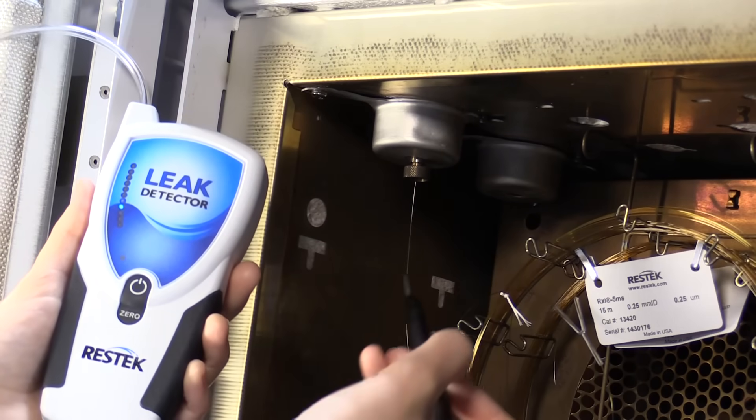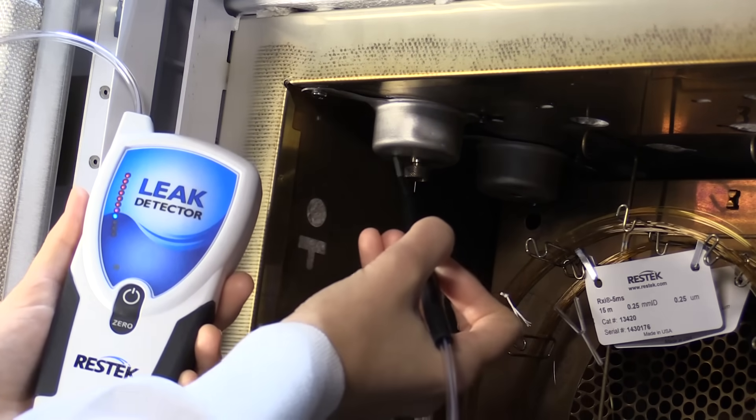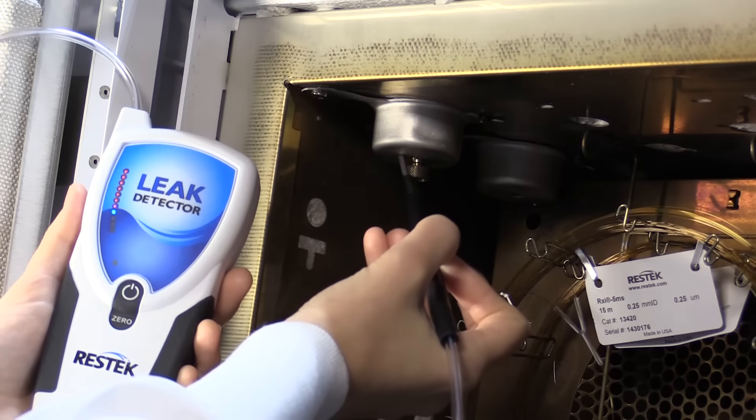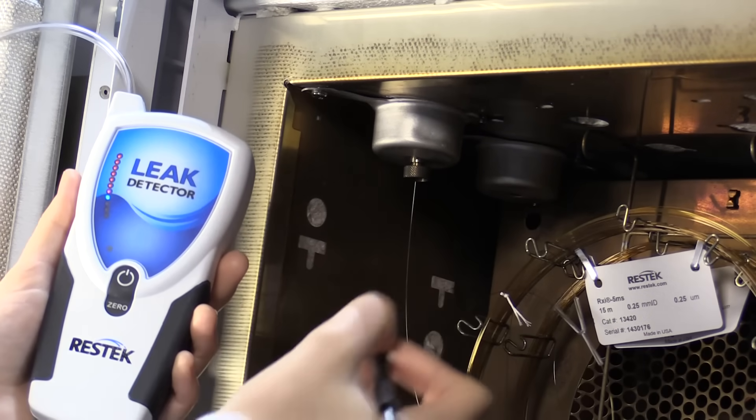In addition, ferrules, especially Vespel graphite blend ferrules, tend to shrink slightly after initial heating cycles, which may also lead to a leak.